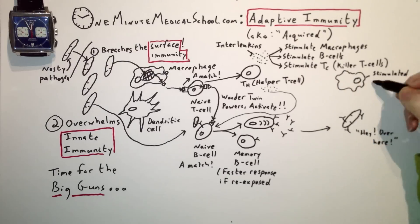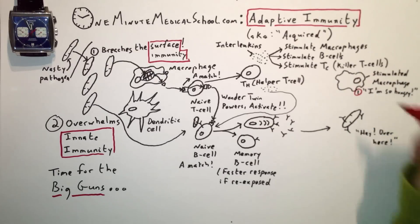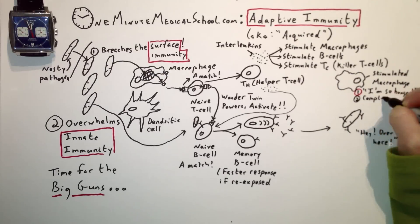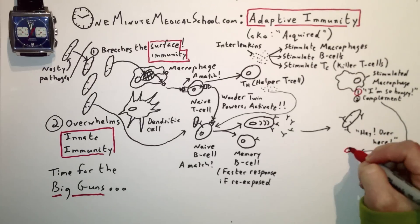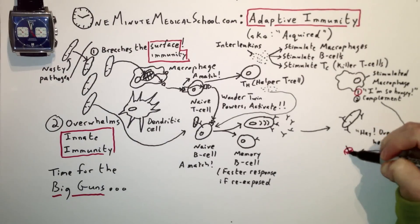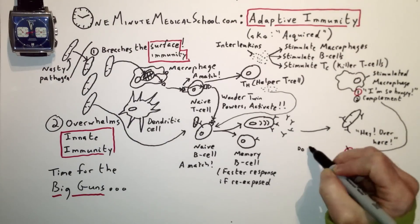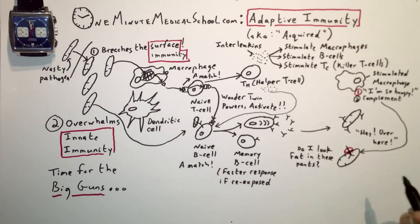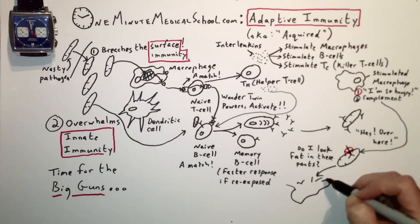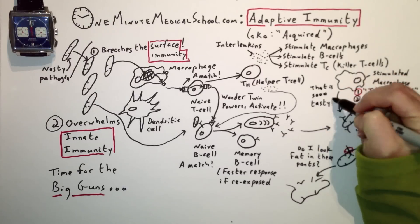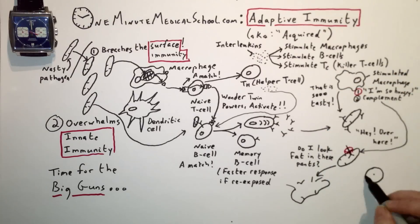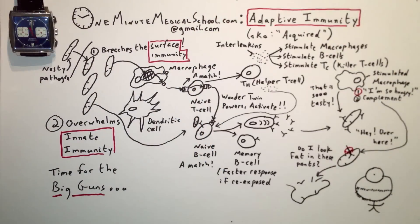The antibodies coat the pathogens. Macrophages love coated pathogens. They also secrete complement, which forms protein rings that punch holes in pathogens and cause them to burst like water balloons. Together, this leads to successful repulsion of the pathogen attack.